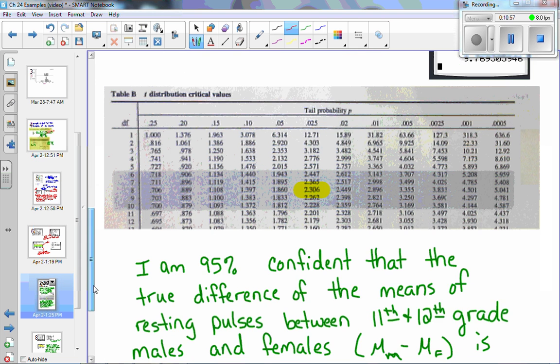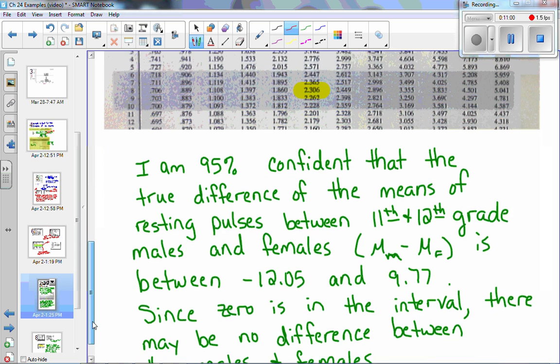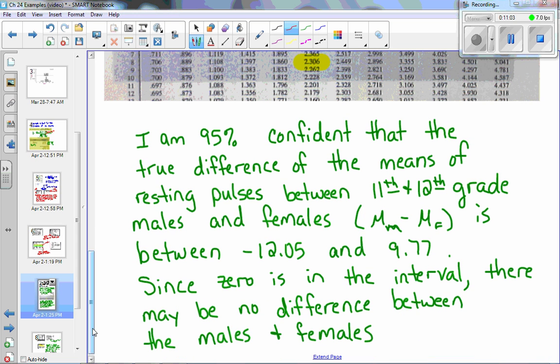So what that means when you interpret, I am 95% confident that the true difference of the means of resting pulses between 11th and 12th grade males and females, μ sub m minus μ sub f, and sometimes if I'm not clear I like to tell the way that I subtracted it, is between negative 12.05 and 9.77. Since zero is in the interval, there may be no difference between the males and females. Notice that negative 12.05 would indicate that the males had a smaller resting pulse, and a positive 9.77 would indicate that the males had a higher resting pulse rate. So it does cross over zero, which means it is possible that there is no difference.